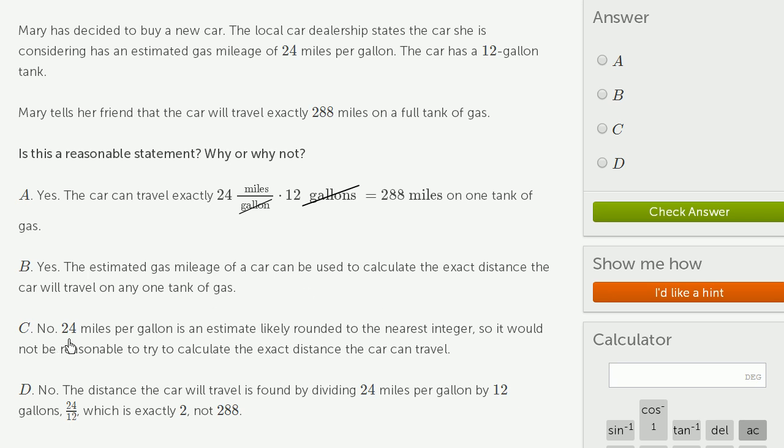C, no, it's not a reasonable statement. 24 miles per gallon is an estimate likely rounded to the nearest integer, so it would not be reasonable to try to calculate the exact distance the car can travel. Well that's what I've been saying all along throughout this video.